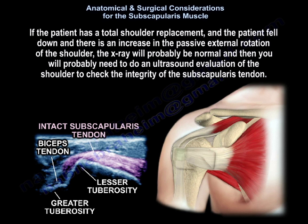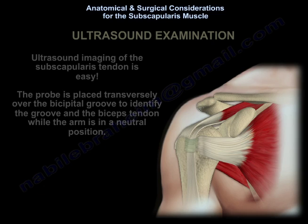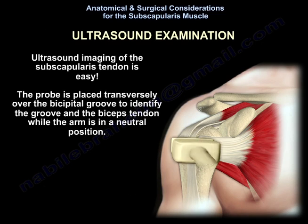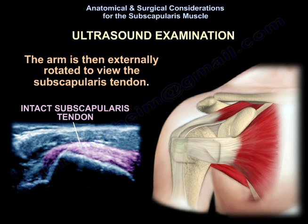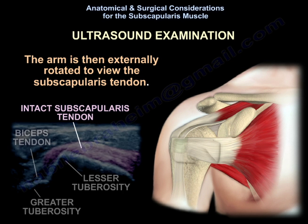If the patient has a total shoulder replacement and falls with an increase in passive external rotation, the x-ray will probably be normal. An ultrasound evaluation is then needed to check the integrity of the subscapularis tendon. The probe is placed transversely over the bicipital groove to identify the groove and biceps tendon in neutral position, then the arm is externally rotated to view the subscapularis tendon.